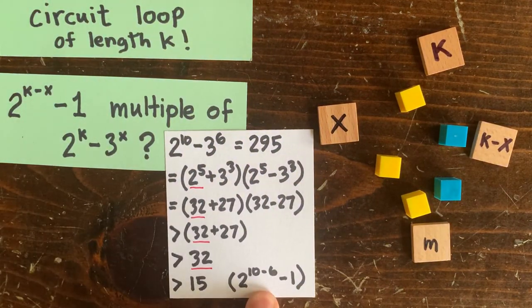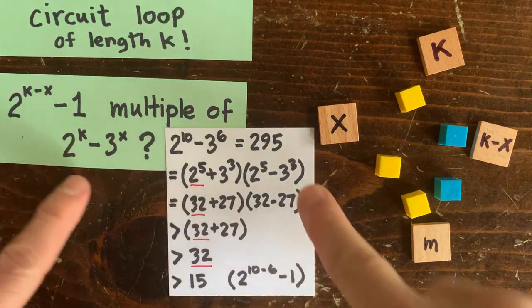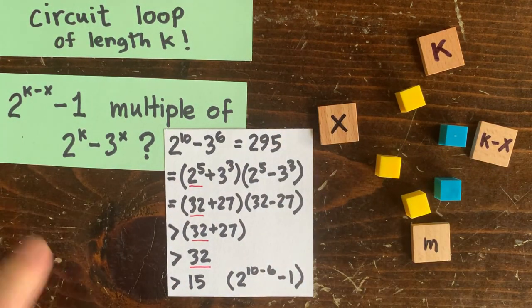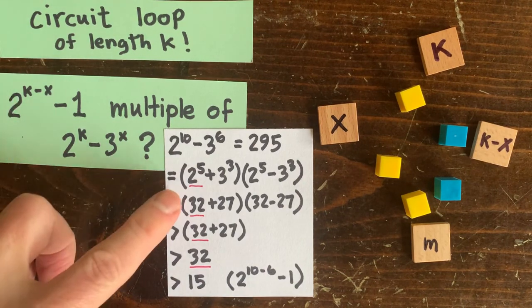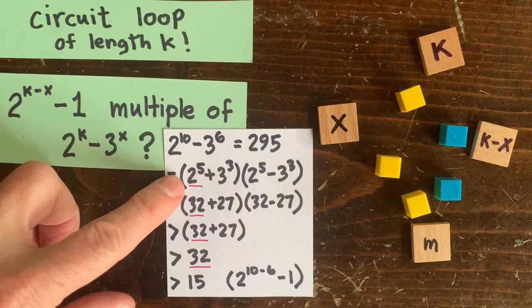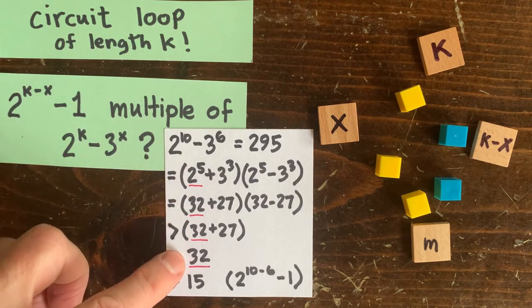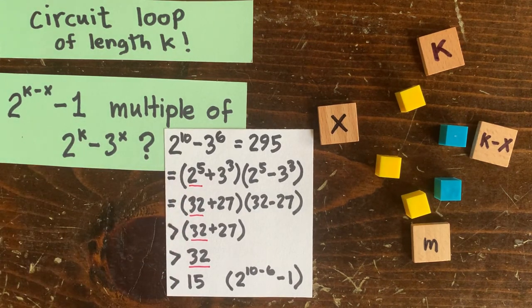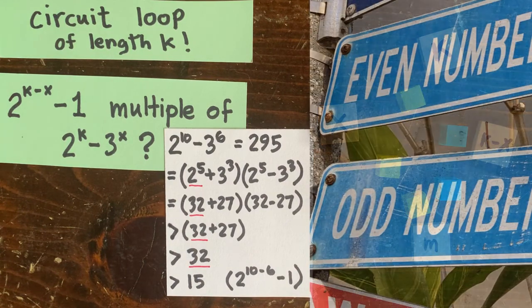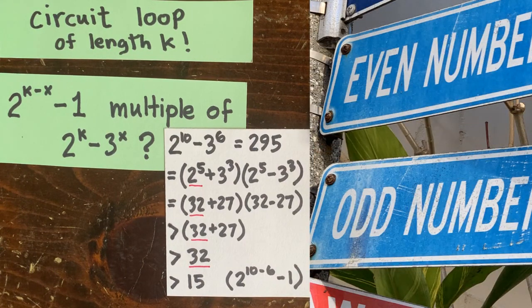Here, 2^(10-6)-1 is only 15, which is way smaller than 2^10 - 3^6, or 295. In fact, if we factor the 295, we can prove that the 15 is smaller than even just this piece of the 295, underlined in red. And this proof works whenever x and k are even, like here, but all hell breaks loose when x or k are odd.